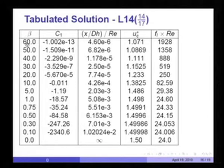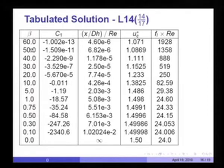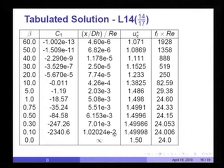At β = 60, C₁ turns out to be extremely small and negative. It corresponds to x* = x/(d_h · Re) = 4.60 × 10⁻⁶. Here x is divided by the hydraulic diameter d_h and then by Reynolds number. u*_c is the centerline velocity divided by u-bar, and F_L · Re is the local friction factor times Reynolds number. As β decreases, x increases, and finally for β = 0.1, x equals approximately 0.01 and u*_c becomes essentially 1.5.